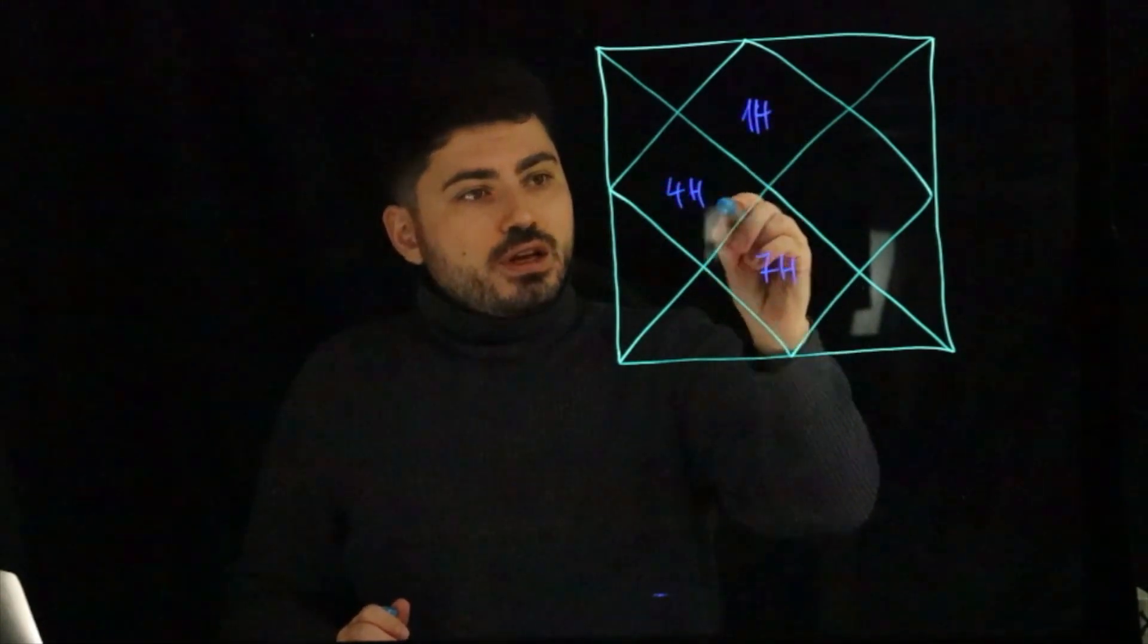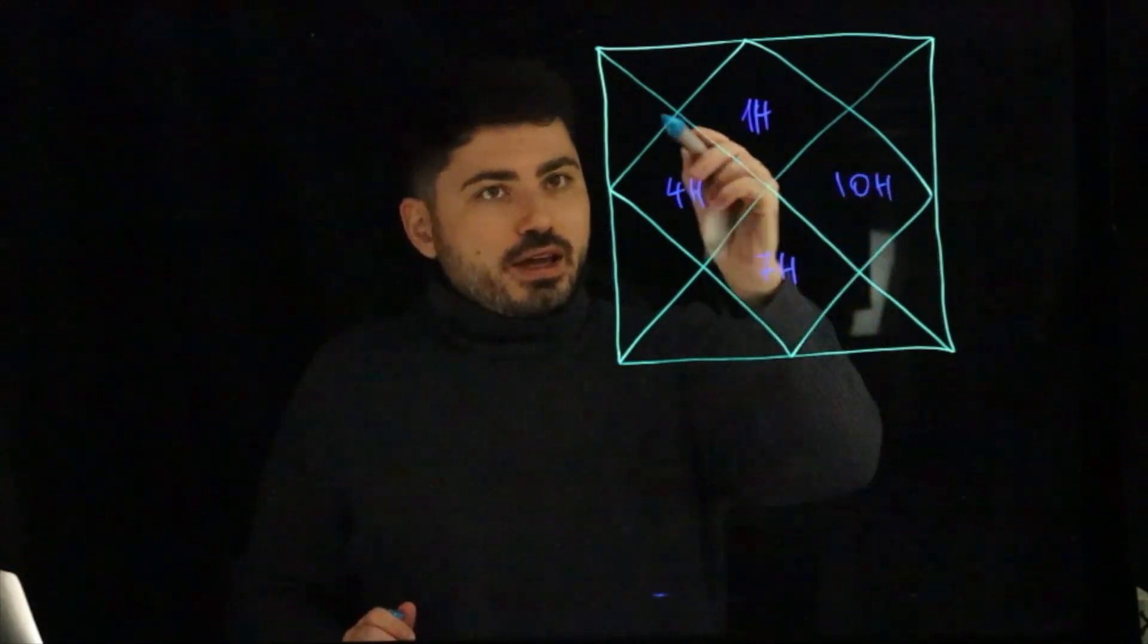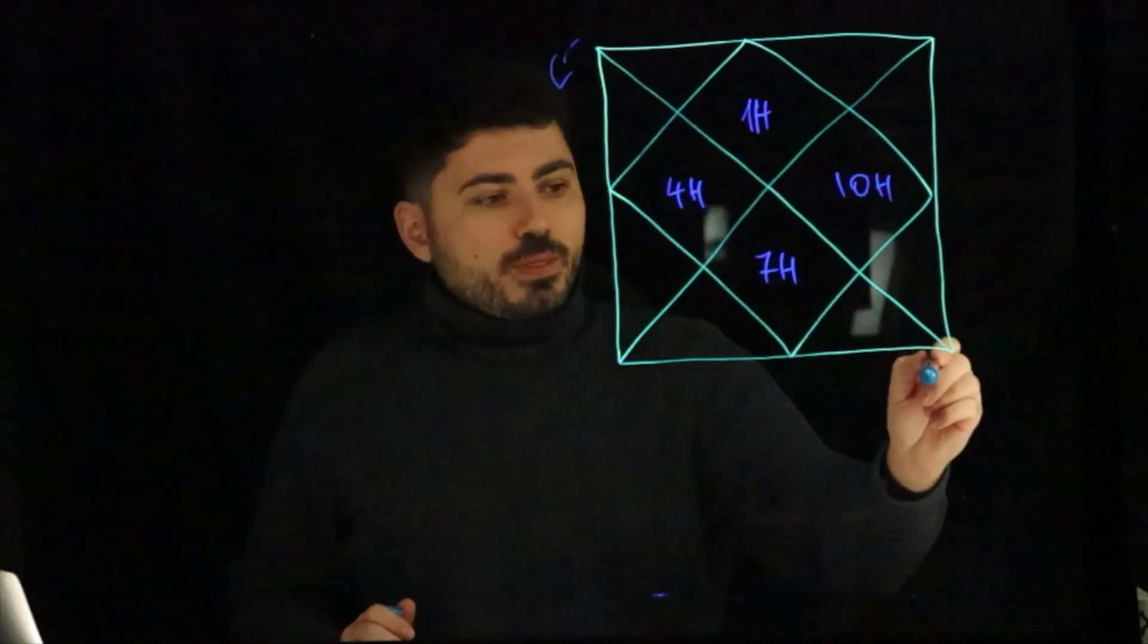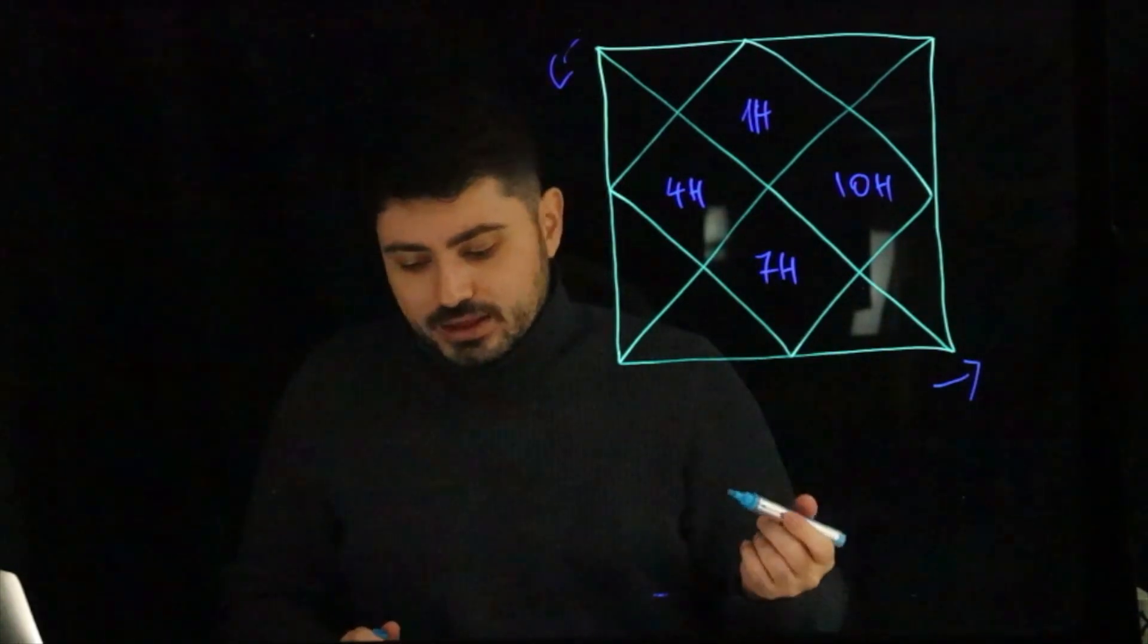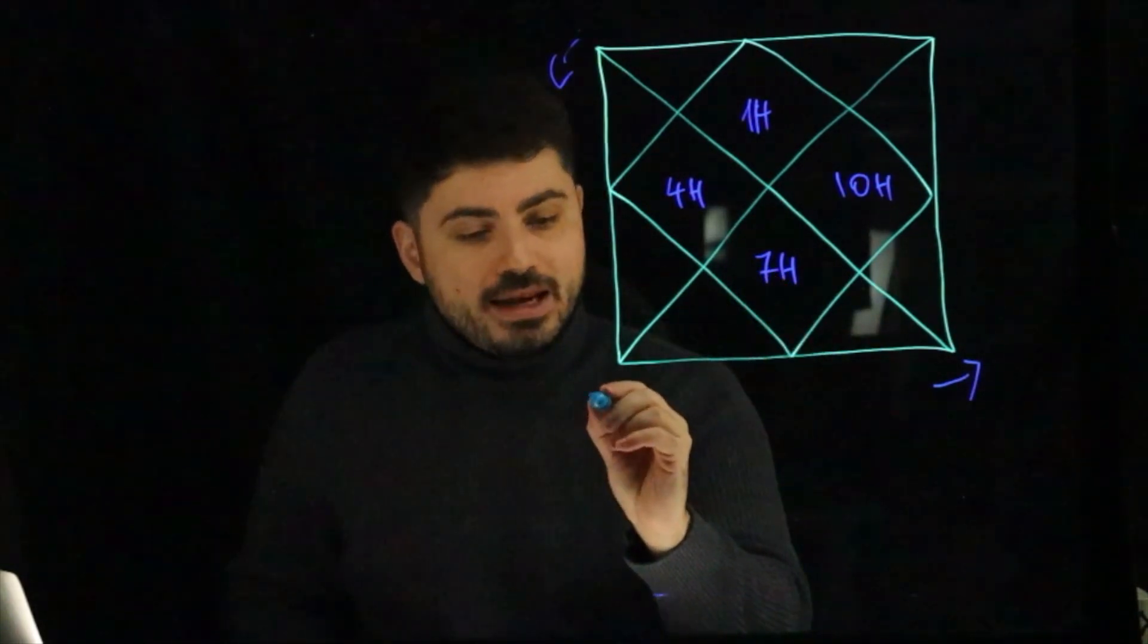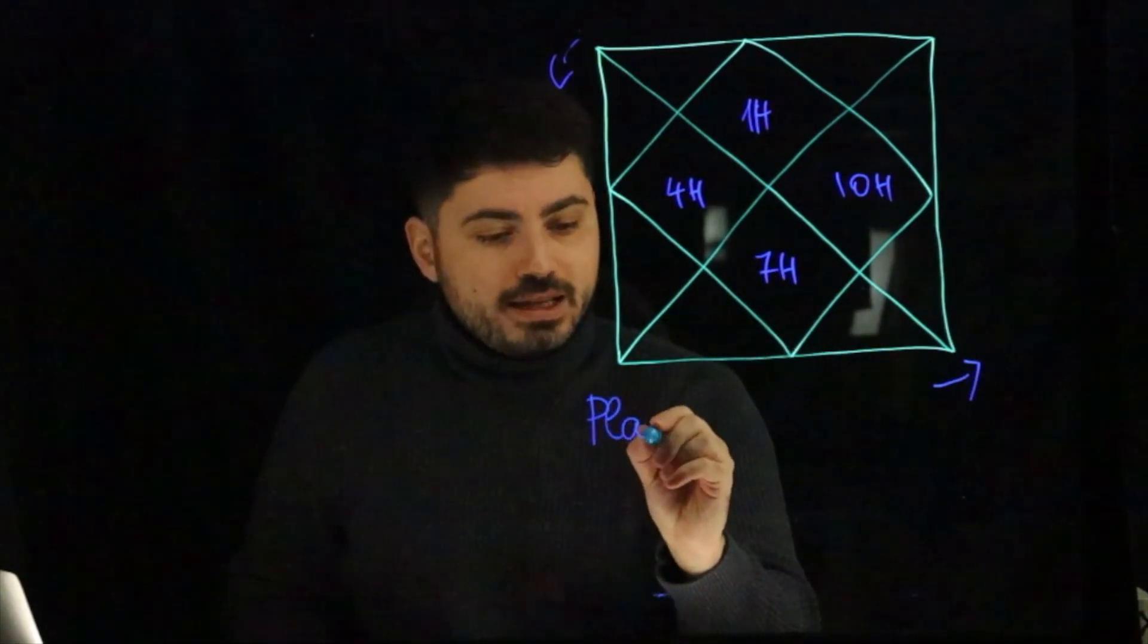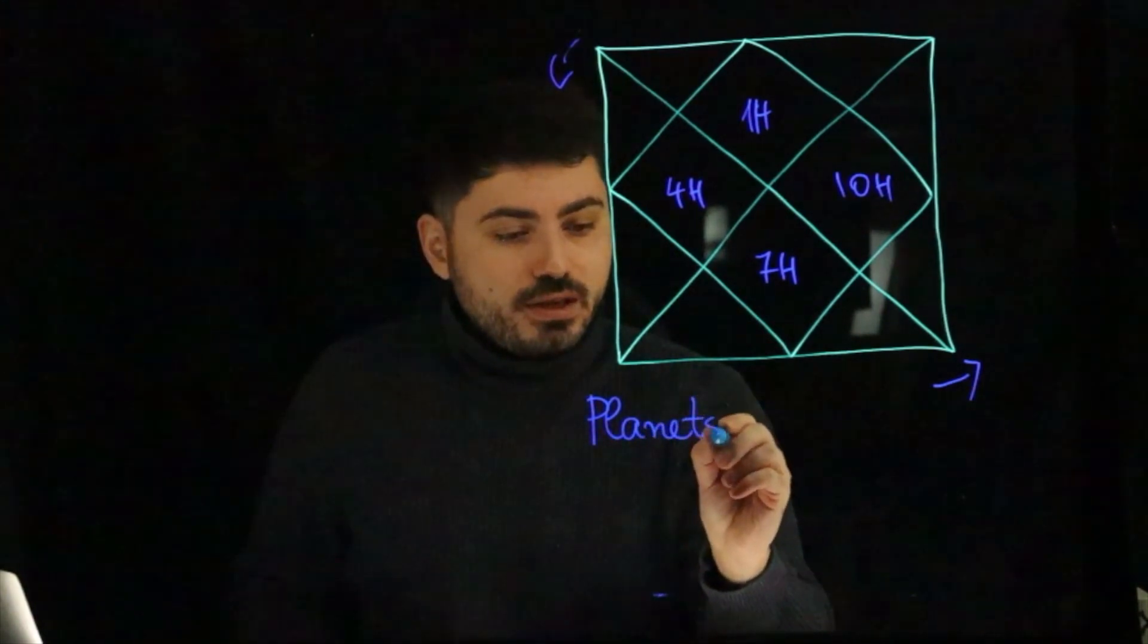Okay, so first thing you have to check all the houses. You know that this is the first house, second house, third, four, fifth, six, seven. This is the first house, this is the seventh house, this is the fourth house, this is the tenth house. So the first thing is to check the whole chart. The other thing you have to check are the planets, the following planets. They are the rulers, the main rulers.